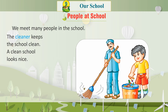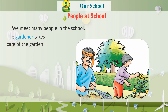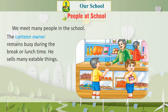The cleaner keeps the school clean, and a clean school looks nice. The gardener takes care of the garden. The canteen owner remains busy during the break or lunch time and sells many eatable things.